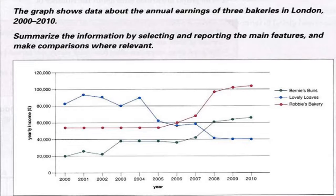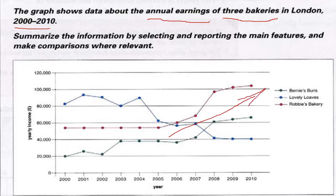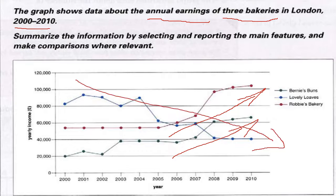As you can see, this task is showing us data about 3 bakeries and how their income changed over time. If you have a general look, you can see that the main information is that the business of 2 bakeries went upwards, and the income of a 3rd bakery fell downwards over the period. This is something that happened over the complete period, so this information is going to be part of our second paragraph, which is going to be the summary. As we are noticing these pieces of information, we keep writing them down in short words to help us recall these ideas.